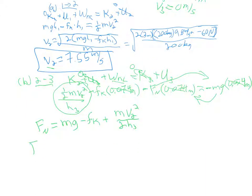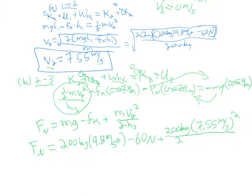So if we do the calculation, the normal force should be 200 kg times 9.8 m per second squared minus the 60 N force, and then plus our mass, which is 200 kg, multiplied by our velocity, which we just found to be 7.55 m per second, and that's squared all over 2 times our height of 0.074 meters. You plug and chug, and you should get the answer of normal force equals approximately 79,000 newtons.